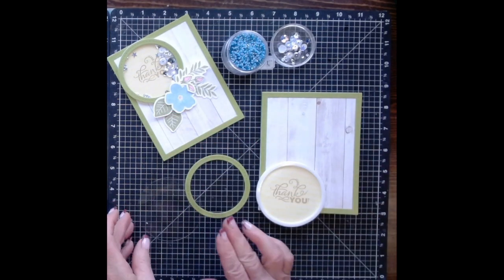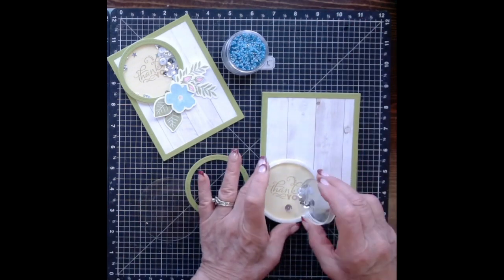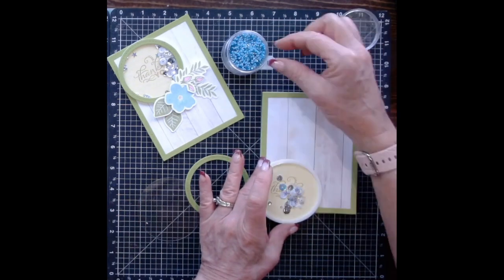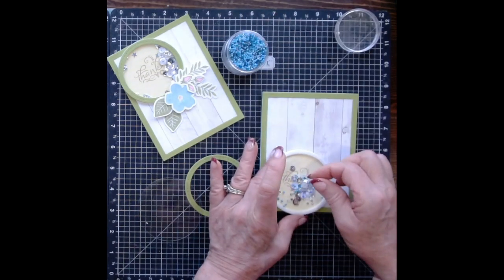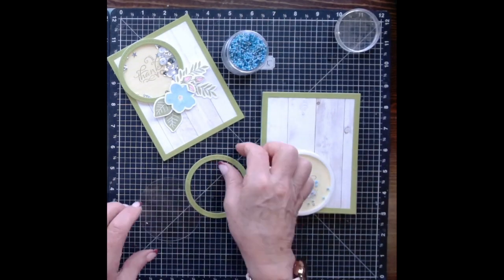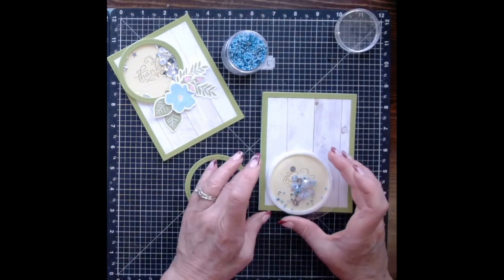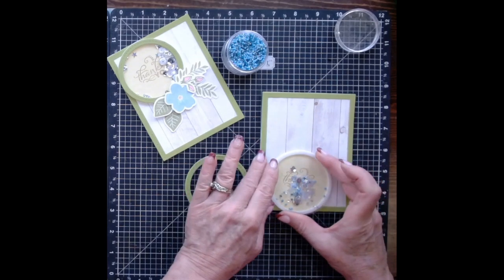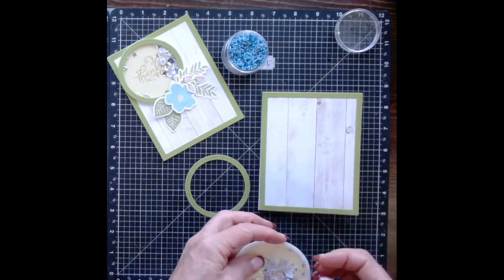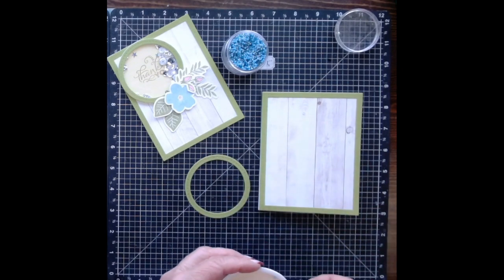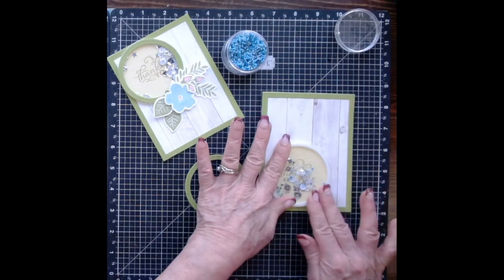So I'm going to pour in some of the silver sequins and then put in some of those blue beads that I had in my stash just to add a little bit of color to tie it in with that blue flower. And now I can place my acetate on top of that 3D foam. I see a couple beads are stuck to the foam so I'm just going to go ahead and push them inside and then make sure that it's completely adhered.